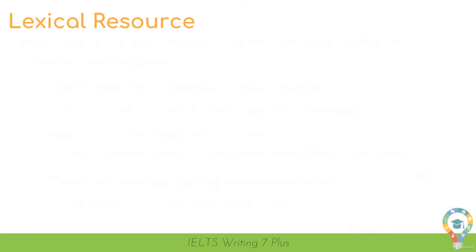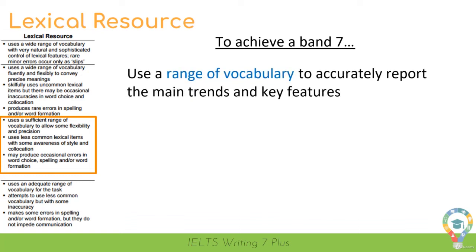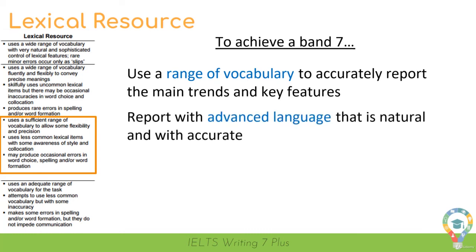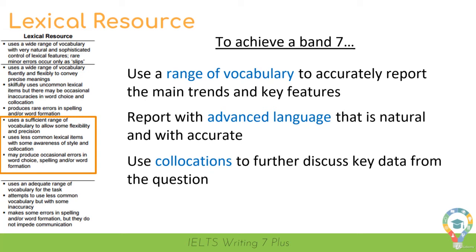Here are the lexical resource band descriptors. Again, if you'd like to pause the video and have a quick read, then do that. To get a band 7, you must be able to use a range of language to accurately report main trends and key features in the data. Try to use advanced language that is natural without any errors. And try to use collocations to further discuss key information. Collocations are very commonly paired words that make a phrase — commonly paired by native speakers. I'll be teaching a lot of collocations in the vocabulary section of this course.